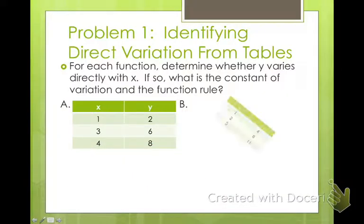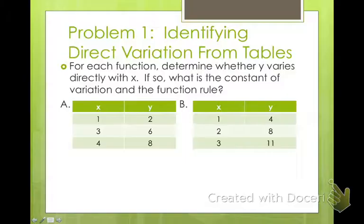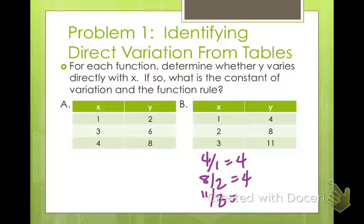Let's take a look at the second one. Let's do the same thing, y divided by x. So I have 4 divided by 1 is 4, 8 divided by 2 is also 4, 11 divided by 3 is 11 thirds, that is not 4. So this is not a direct variation.